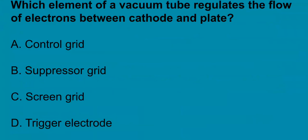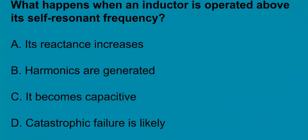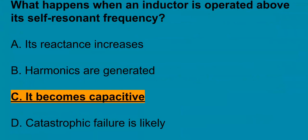G6A10, which element of the vacuum tube regulates the flow of electrons between the cathode and plate? It's the control grid. G6A11, what happens when an inductor is operated above its self-resonant frequency? It becomes capacitive.